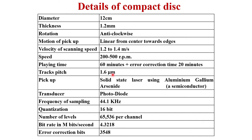Track pitch — the distance between two tracks — is 1.6 micrometers. The pickup uses a solid-state laser with aluminium gallium arsenide semiconductor; transducers are photodiodes. Frequency of sampling is 44.1 kilohertz. Quantization is 16 bits, giving 65,536 levels per channel, since 2 raised to 16 equals 65,536. Bit rate is 4.321 megabits per second, calculated as n times fs, where n is the number of bits and fs is the sampling frequency.